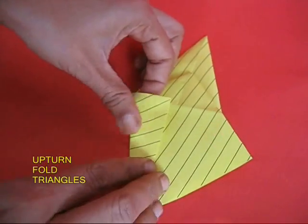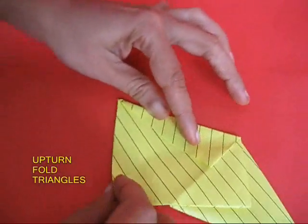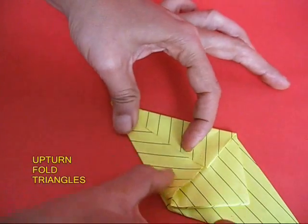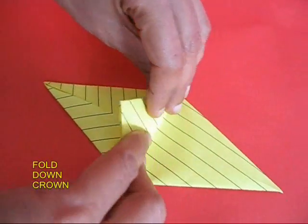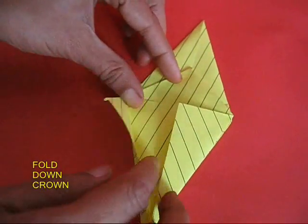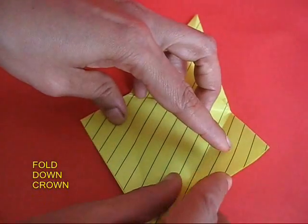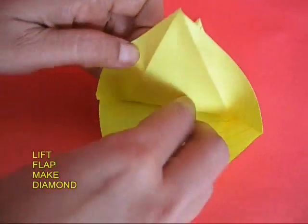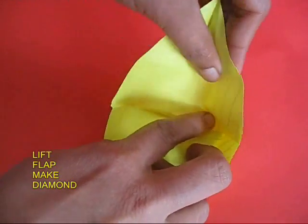Reverse the paper. Once again fold the two triangles and then the triangular crown, open it up, lift both the triangles and then lift the flap to make the second diamond.